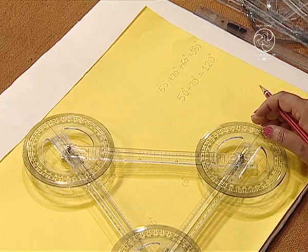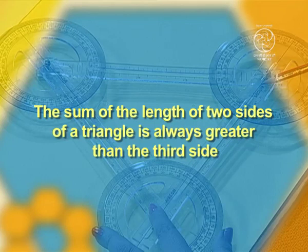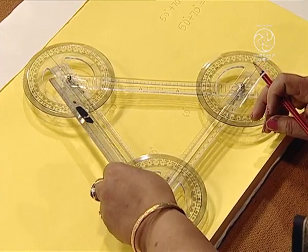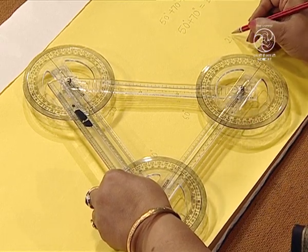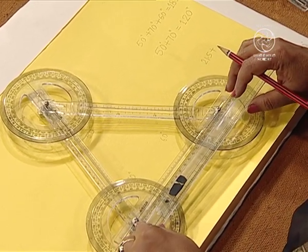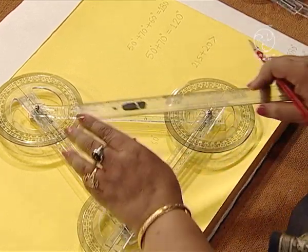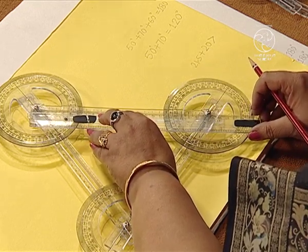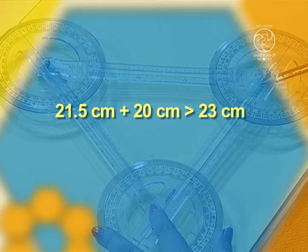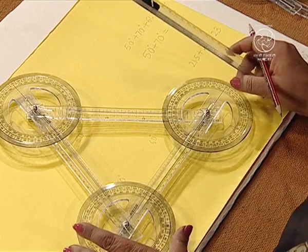We also have another interesting property — the triangle inequality — which states that the sum of the lengths of any two sides of a triangle is always greater than the third side. We measured the side lengths earlier: 21.5 centimetres plus 20 centimetres, which is obviously greater than 23 centimetres. We have seen how different properties of a triangle can be easily verified with the help of these plastic strips and protractors.